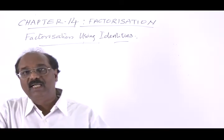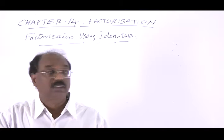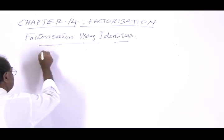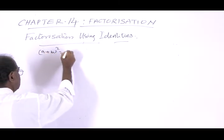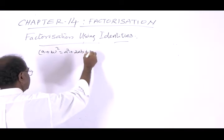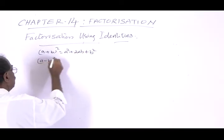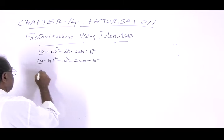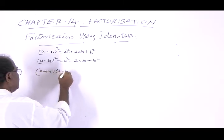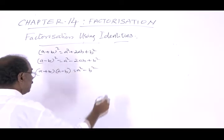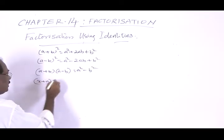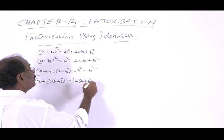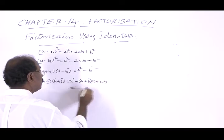Now, factorization using identities. We have four identities. These identities are: (a + b)² = a² + 2ab + b²; (a - b)² = a² - 2ab + b²; (a + b)(a - b) = a² - b²; and (x + a)(x + b) = x² + (a + b)x + ab. So these are the four identities.